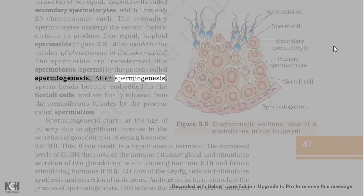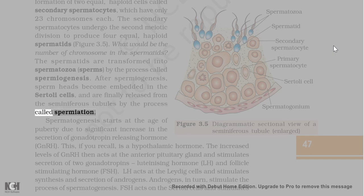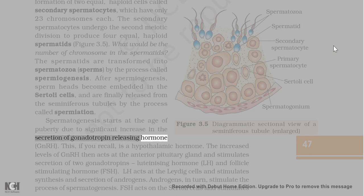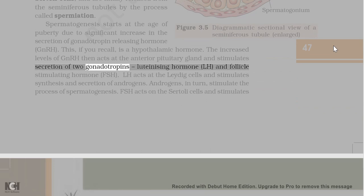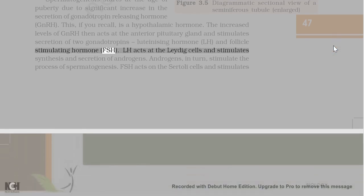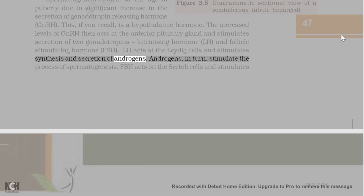After spermiogenesis, sperm heads become embedded in the Sertoli cells and are finally released from the seminiferous tubules by the process called spermiation. Spermatogenesis starts at the age of puberty due to significant increase in the secretion of gonadotropin-releasing hormone (GnRH), a hypothalamic hormone. The increased levels of GnRH then act at the anterior pituitary gland and stimulate secretion of two gonadotropins: luteinizing hormone (LH) and follicle-stimulating hormone (FSH). LH acts at the Leydig cells and stimulates synthesis and secretion of androgens, which in turn stimulate the process of spermatogenesis.